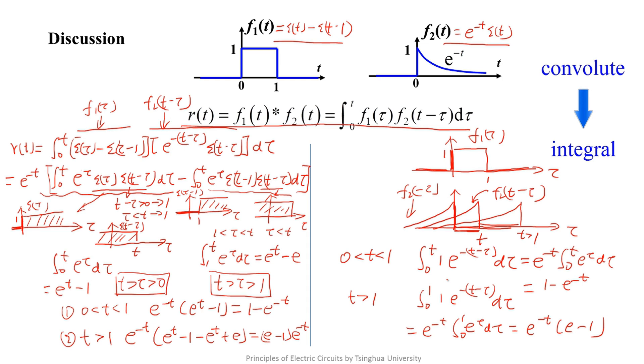one waveform convolutes along the vertical axis and then moves, and the limits of the integral is determined by the overlapping area of the two graphs. This is the key reason for the convolution integral's name.